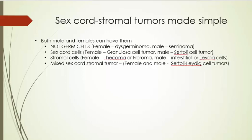Let's take a closer look at these tumors. The term sex cord stromal tumors can be confusing, so let's break down the tumors of the testis and ovary. Sex cord stromal tumors can occur in both males and females. These are not germ cells — germ cells give rise to sperm in the male and eggs in the female. Germ cell tumors in females are known as dysgerminomas, and in males, they're seminomas — large round cells with prominent nuclei generally present in sheets without a particular pattern.